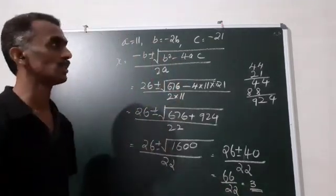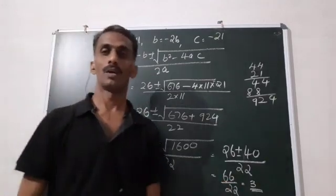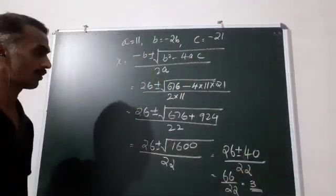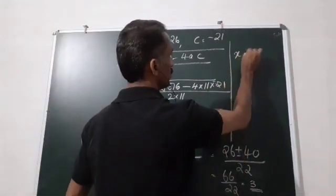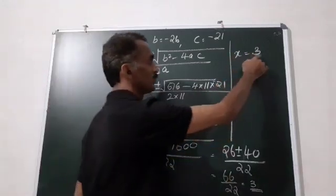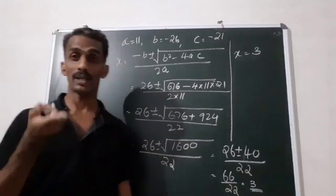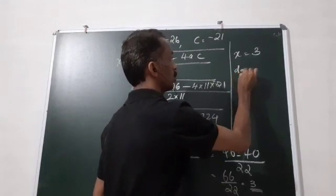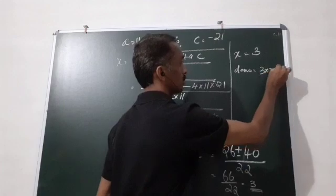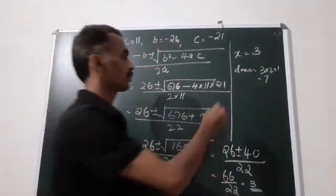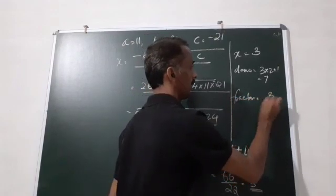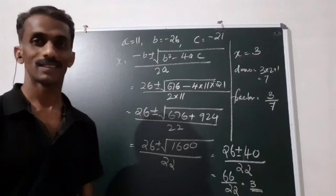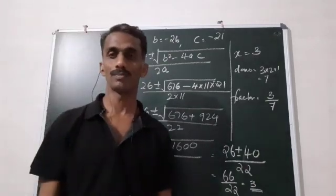The value of x equals 3. So the numerator is 3. The denominator is 2 into 3 plus 1, which equals 7. Therefore the fraction is 3 by 7. Yes, very important question. Thank you.